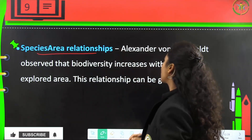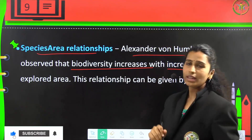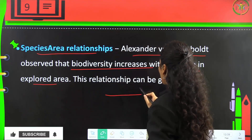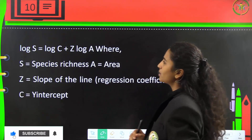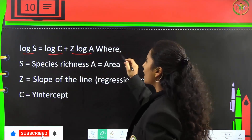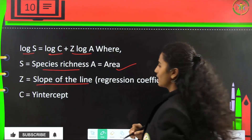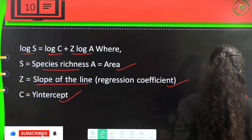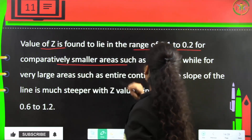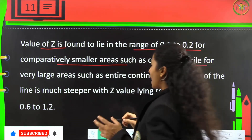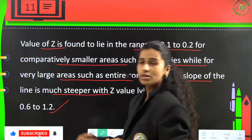Coming to species-area relationships: Alexander von Humboldt observed that biodiversity increases with the increase in the explored area. This relationship is given by log S = log C + Z log A, where S is the species richness, A is the area, Z is the slope of the line (the regression coefficient), and C is the Y-intercept. The value of Z lies between 0.1 to 0.2 for smaller areas like countries, while for large areas such as entire continents, Z lies from 0.6 to 1.2.